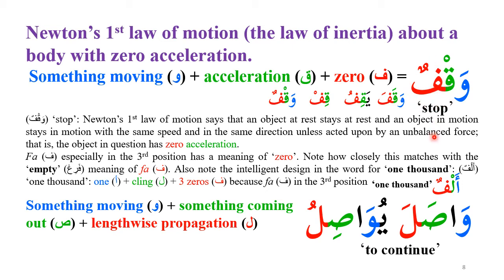The letter Fa means zero — for example, Farigh means empty. Also, the word Alfun means 1,000: Alif is one, Lam is the binding factor, and Fa is zero in the third position, giving 1,000. Every Arabic word carries a built-in definition from its letters. So Waqfun means something moving for which gravity or acceleration becomes zero. Similarly, in Wasala — meaning to arrive or continue — the Waw remains present, showing continued movement.